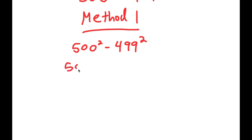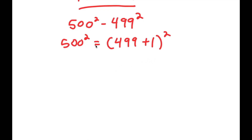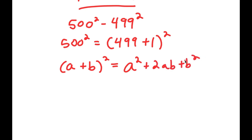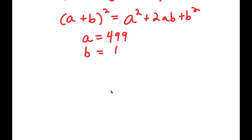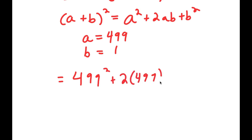I'm going to rewrite 500 squared as 499 plus 1 squared. If I have something in the form a plus b squared, this is equal to a squared plus 2ab plus b squared. Here a is 499 and b equals 1, so this turns into 499 squared plus 2 times 499 times 1 plus 1 squared.